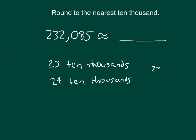Our midway point is 235,000. Now, the question is whether this number is less than our midpoint or more than our midpoint. In this case, it's less than our midpoint, so our number is going to be closer to our lower endpoint. Our lower endpoint was 23 ten-thousands, or 230,000 in standard form. Therefore, 232,085 rounded to the nearest 10,000 is 230,000.